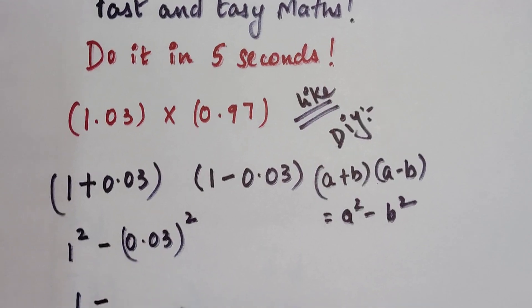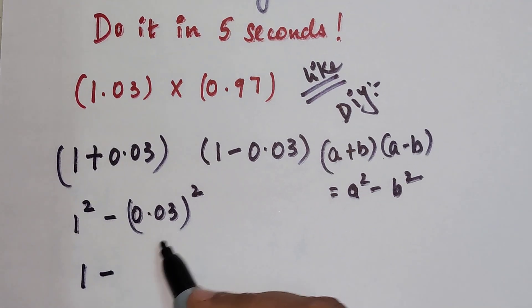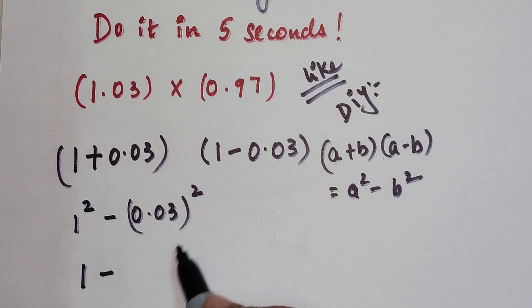So 1 squared is 1 minus. Now please understand, whenever you are taking a square of a decimal number, the number of places after the decimal point will get doubled.